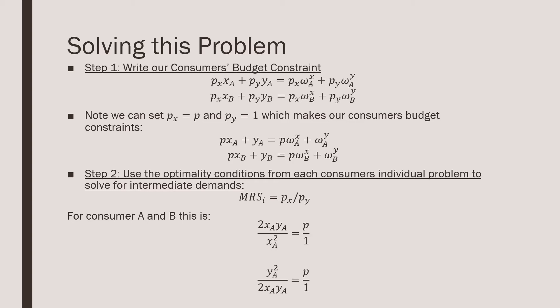This makes our consumer's budget constraints the following. For consumer A, we have PXA plus YA, since PY equals 1, equals P times omega A, which is the endowment of good X, plus omega AY, which is our endowment of Y. And the same thing for consumer B.